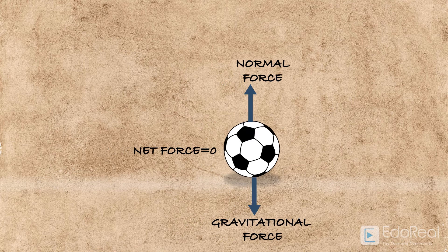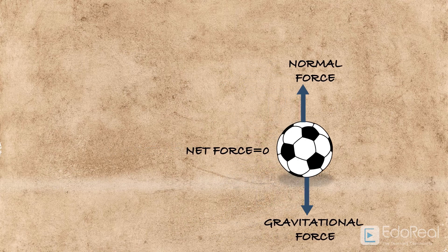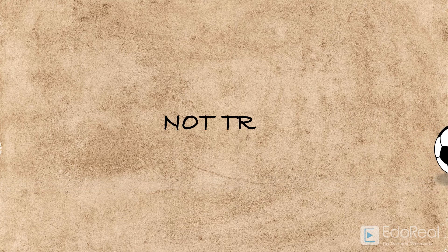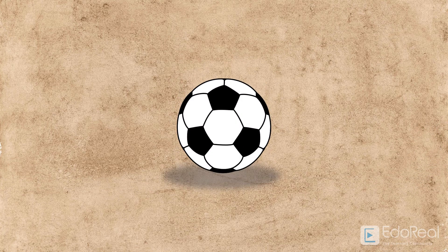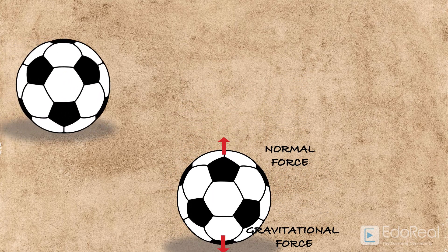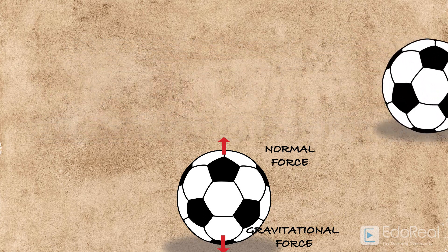Now, will the ball ever stop moving? No, it will continue with the same velocity unless there is another external force acting on it. But we assume that if the body is moving, then there is some net force acting on it — which is not true. Hence, if the body is stationary, don't think there is no force on it. And if the body is moving with uniform velocity, don't think there is some net force acting on it.